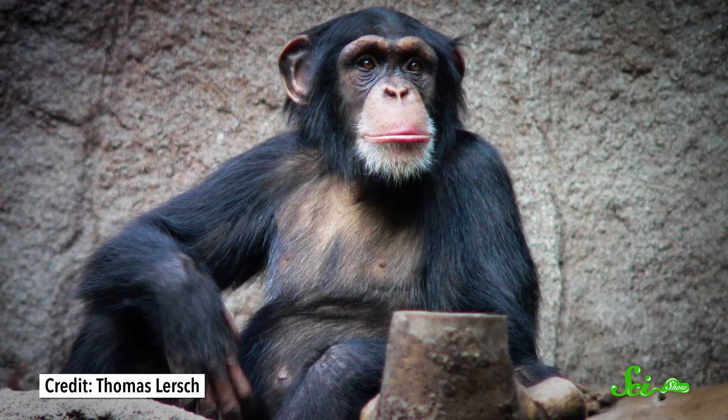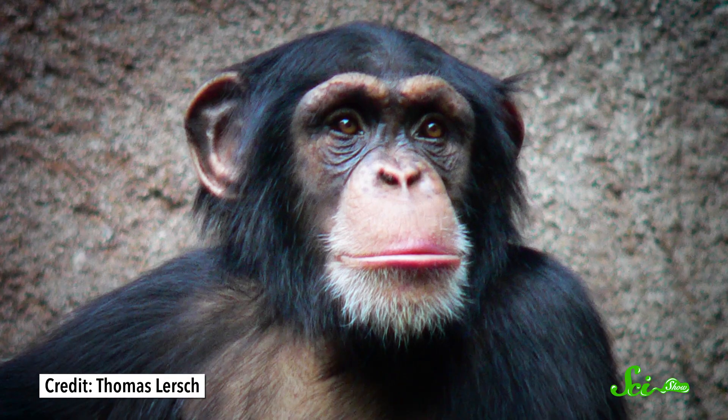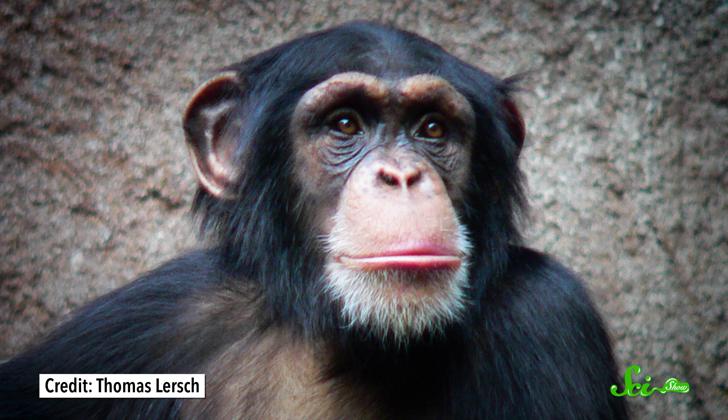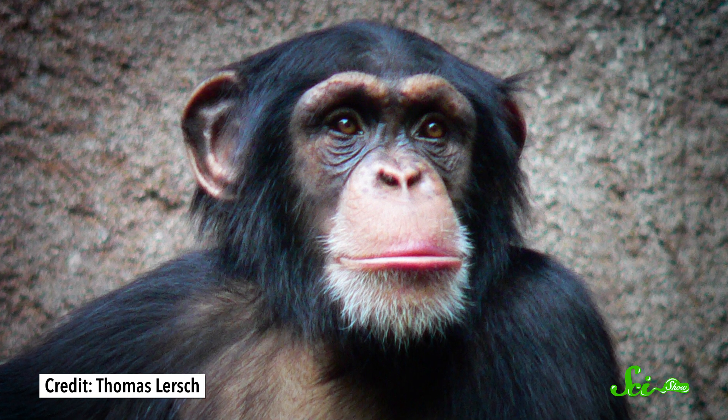However, our distant cousins, the other great apes, still have it. And you can see their whiskers if you look closely. They're not the big flashy whiskers your cat has. But chimps, gorillas, and orangutans all have microvibrissae all around their mouths and eyebrows.